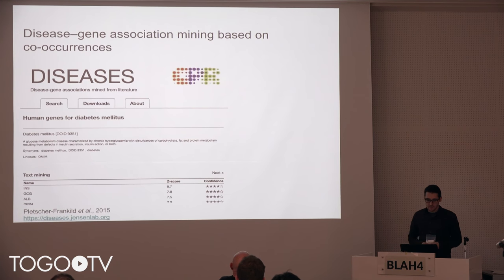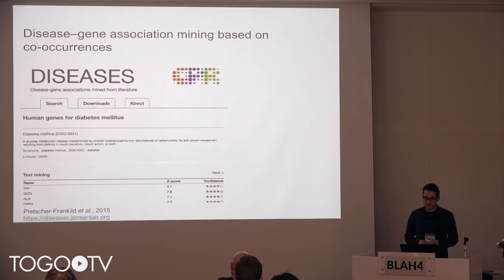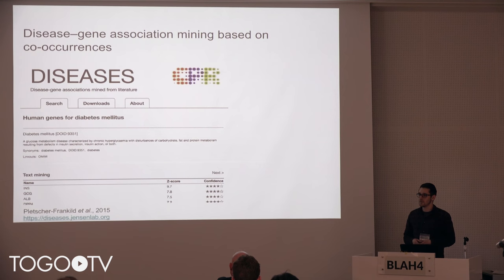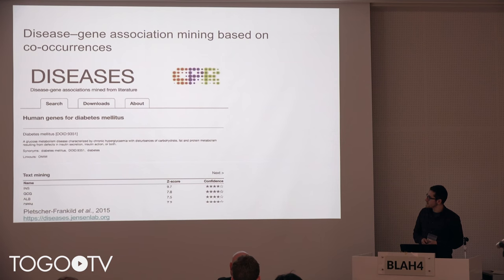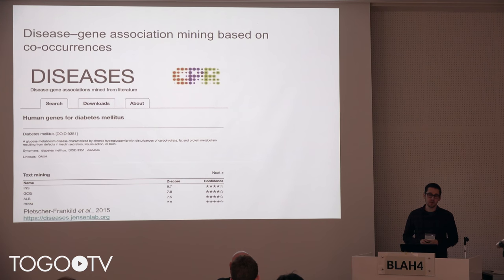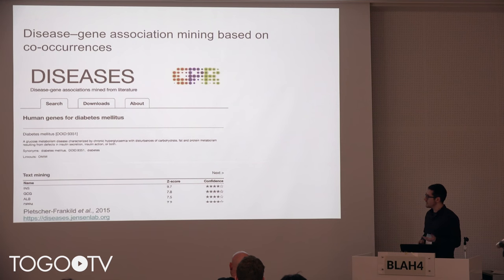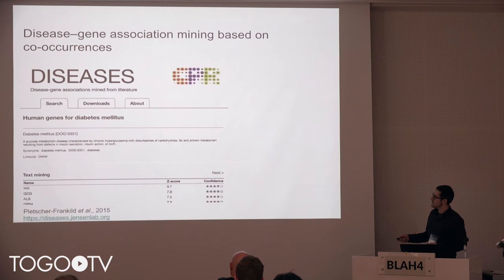The DISEASES database is a database that has been developed in our group over the last years. It lists associations between diseases and genes, primarily extracted from text-mining Medline abstracts. It also integrates, to a lesser extent, curated knowledge about such associations and genome-wide association studies. If you search the DISEASES database — you can do that for diseases and genes — you find associations between, for instance, diabetes and insulin, and you also have a score for these associations based on text-mining evidence.